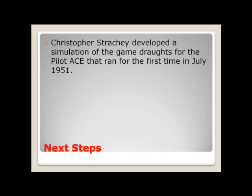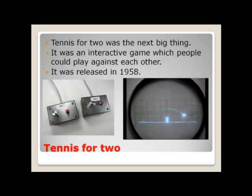Following this, Tennis for Two was released. This was the next big thing and it was an interactive game which people could play against each other. It involved a little dot on the screen going across a little bar like tennis. The controllers involved a dial which you would turn to move your tennis racket up and down, and a little button which you would press to hit it back, and it would go back and forth until someone scored a point.